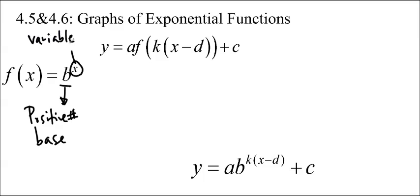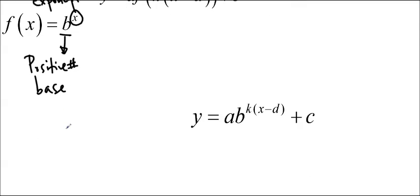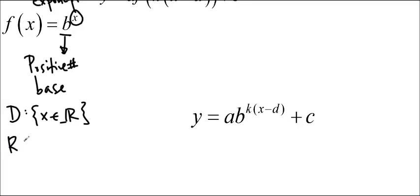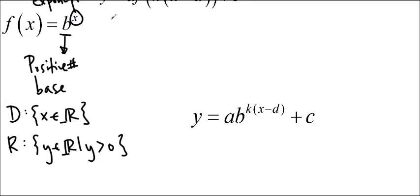That makes the exponential graph. It has a few characteristics. If you always have a positive base, we always know that the domain is always going to be x in R, because it could be any number — you could put any number into the exponent and get a result. And the range has to be y in R such that y is greater than 0, because you can never have a positive number multiplied by itself any number of times to get a negative number or 0.